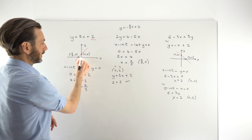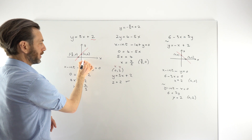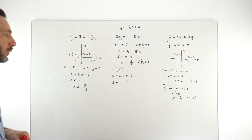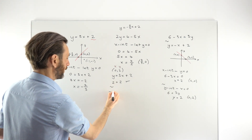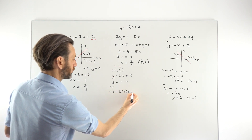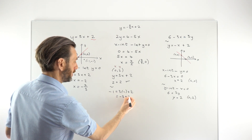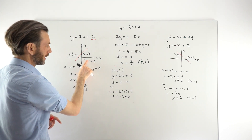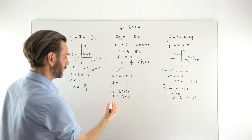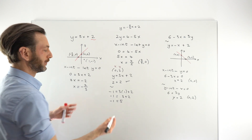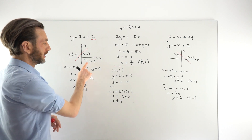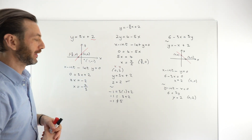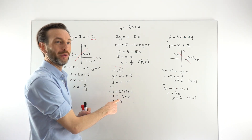If we take a point that clearly doesn't lie on the line — say the point (1, −1), which is clearly not on the line — it should not satisfy the equation. Taking that point and plugging in: for y we get −1, for x we get 3 times 1 plus 2, which is 3 plus 2, giving us minus 1 equals 5. But minus 1 does not equal 5 — we've reached a contradiction, which is exactly what we expected, because this point does not lie on the line.